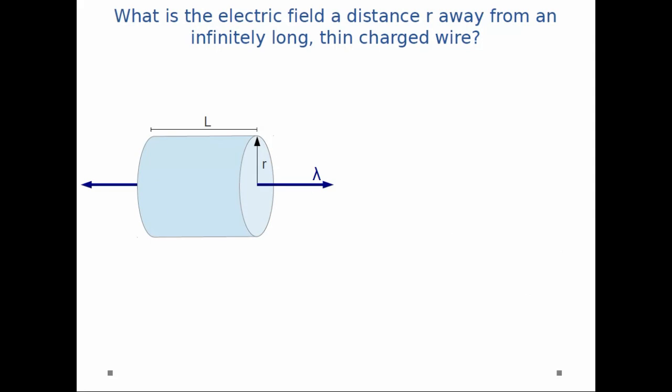Once we figure that out, the rest is quite straightforward. The electric field E times 2πrL, which is the area of that side face, equals q enclosed over epsilon naught. Q enclosed is just my charge density lambda times the length L, divided by epsilon naught. The Ls cancel, and I'm left with E equals lambda divided by 2π epsilon naught r, or E equals 2k lambda divided by r.